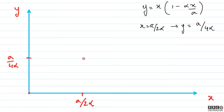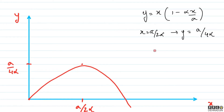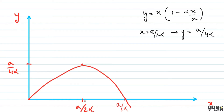Now I can plot the graph. On the x–y axes: when x = 0, y = 0; and when x = a/(2α), y = a/(4α). Since this is a quadratic (parabola), it is symmetric about x = a/(2α). The curve returns to y = 0 at x = a/α, and at the maximum point x = a/(2α) the slope is zero.